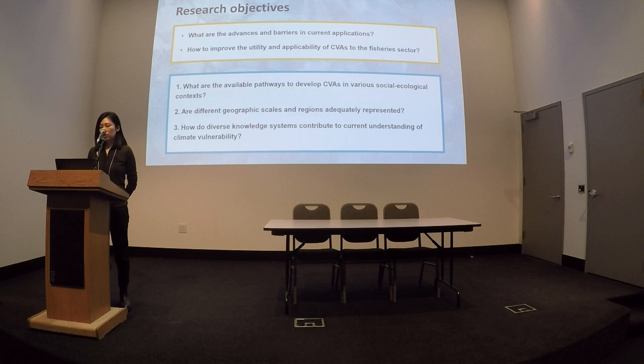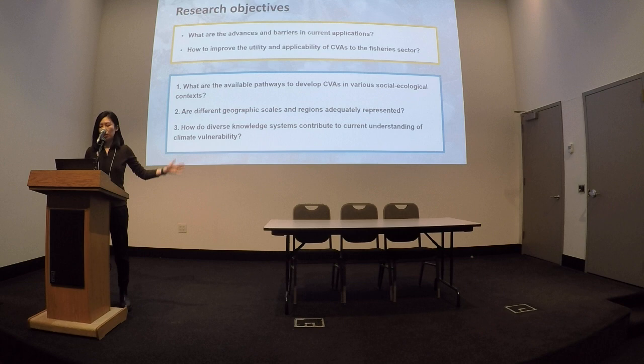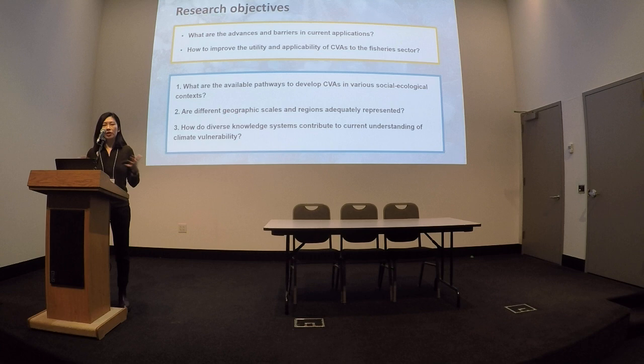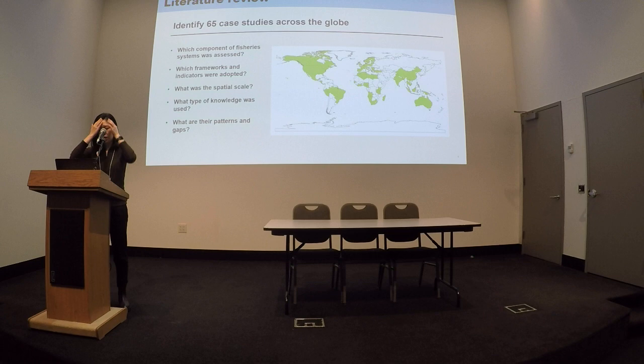It's also important to make sure the CV results are adequately used by policymakers. So we want to answer three more specific questions: what are the available pathways to develop CVA in various social and technological contexts, whether there are any gaps in terms of geographic origins and scales, and lastly, how different knowledge types — like traditional scientific data or local and expert knowledge — contribute to our understanding of fisheries vulnerability.